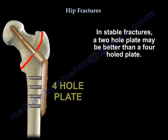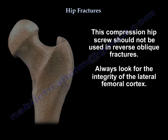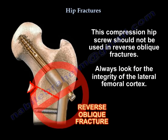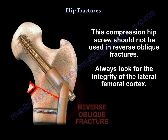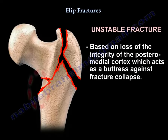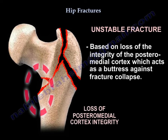In stable fractures, a two-hole plate may be better than a four-hole plate. This compression hip screw should not be used in reverse oblique fractures. Always look for the integrity of the lateral femoral cortex. Unstable fracture is based on loss of integrity of the posteromedial cortex, which acts as a buttress against fracture collapse.